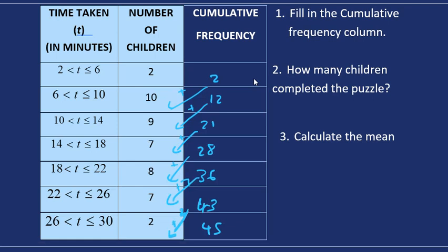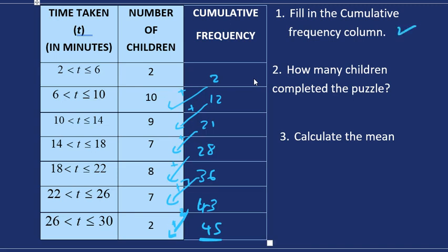So the cumulative frequency will give us the total number of children at the end who participated. We've filled in the cumulative frequency column and we know how many children completed the puzzle, they were 45.